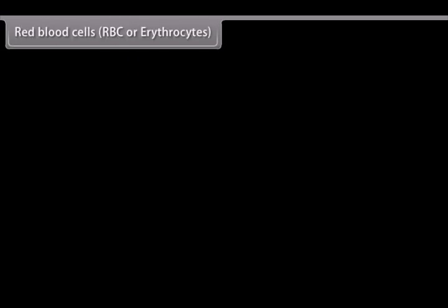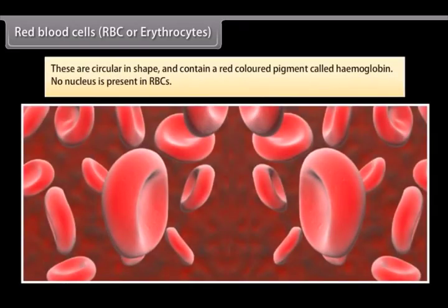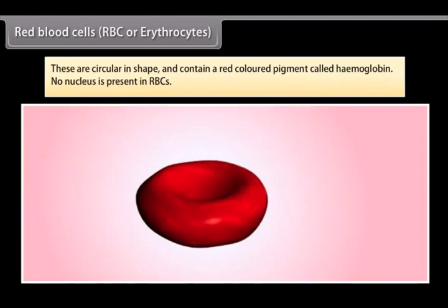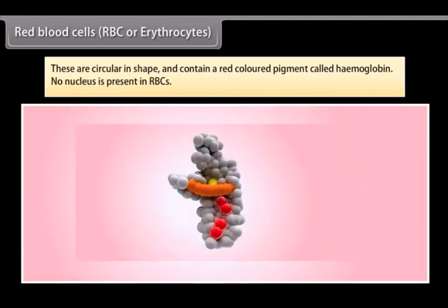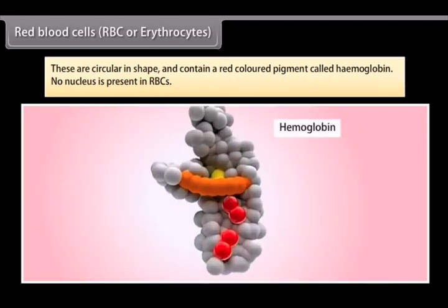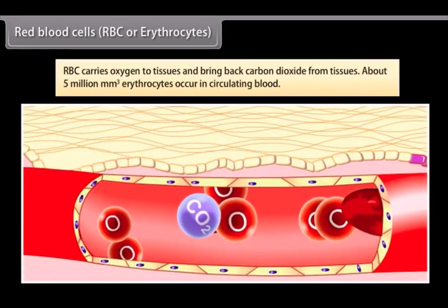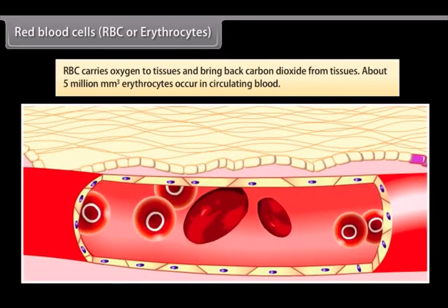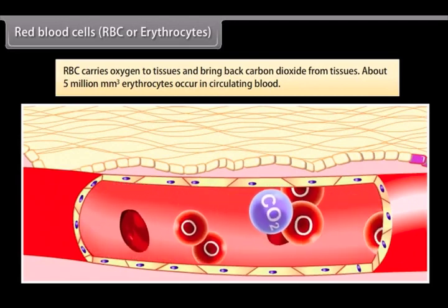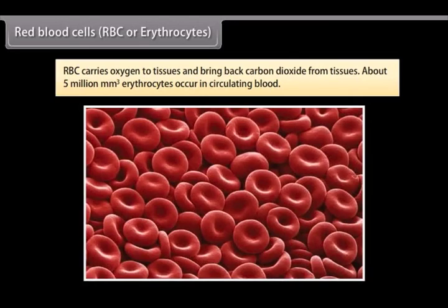Red blood cells, RBC or erythrocytes. These are circular in shape and contain a red colored pigment called hemoglobin. No nucleus is present in RBCs. RBC carries oxygen to tissues and bring back carbon dioxide from tissues. About 5 million per mm cube erythrocytes occur in circulating blood.